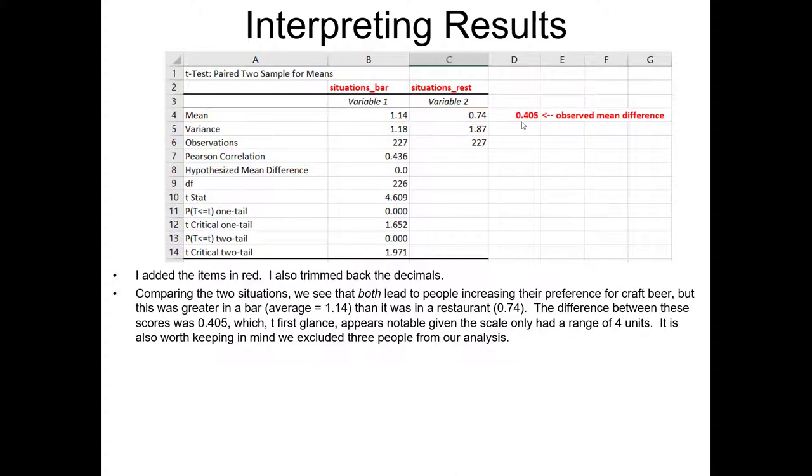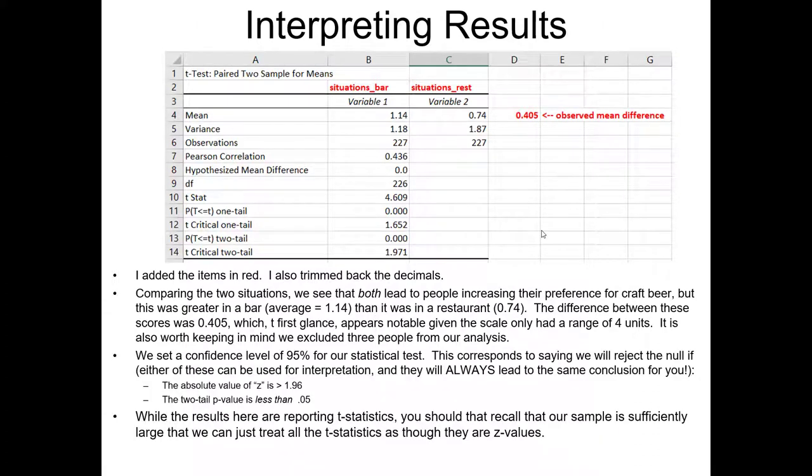But we also see that the preference for craft beer was greater in a bar than in a restaurant. In fact, a difference of 0.4 units. This does seem like a rather large difference considering the range of our scale was only four points, right? So let's actually interpret the statistical test.